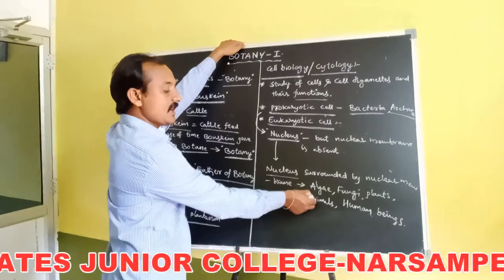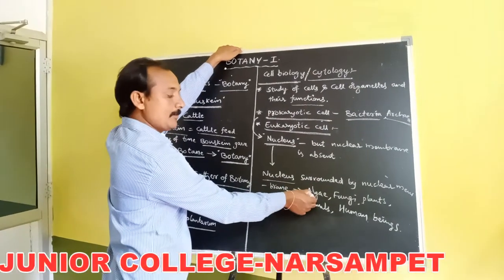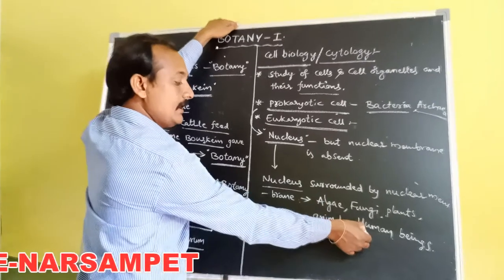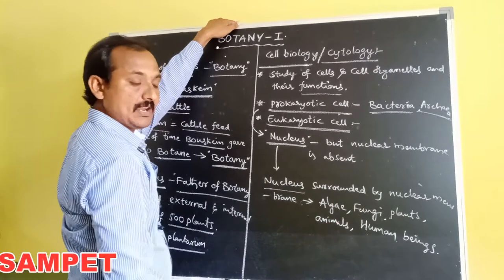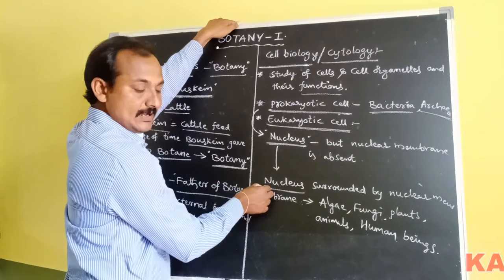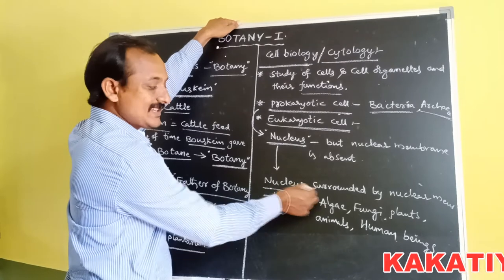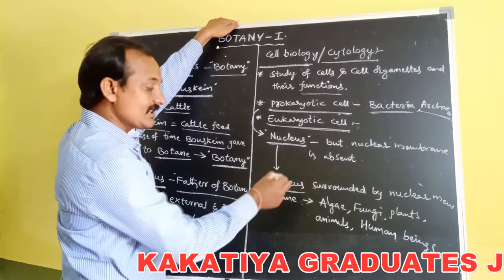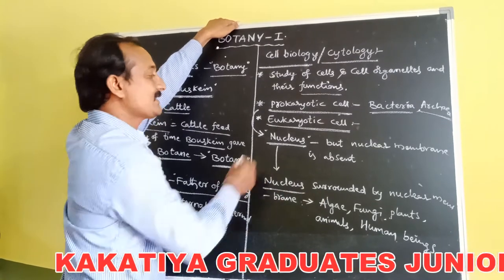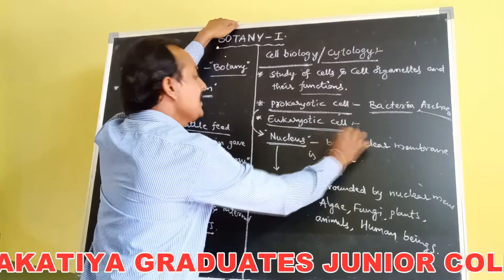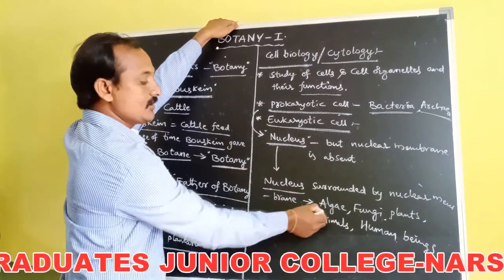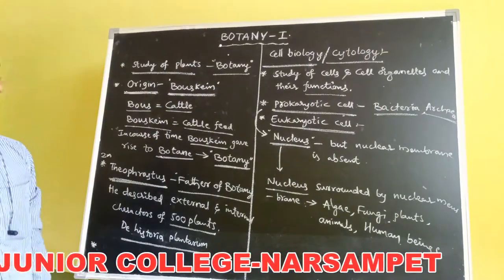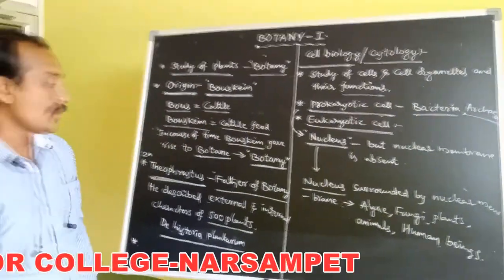In eukaryotic organisms — algal members, fungal members, plants, animals, and human beings — the nucleus is present and surrounded by a nuclear membrane. Such cells are called eukaryotic cells. Examples: algae, fungi, plants, animals, and human beings.